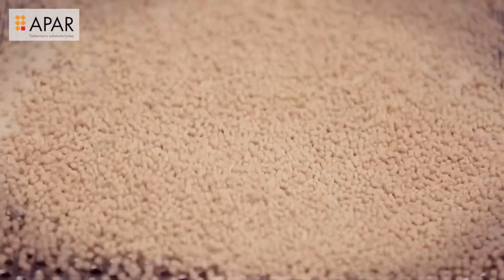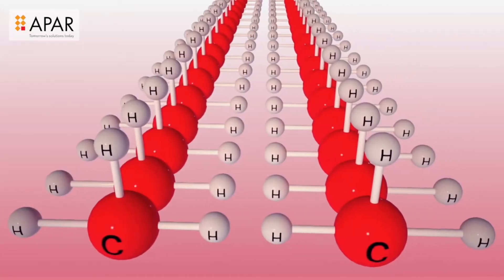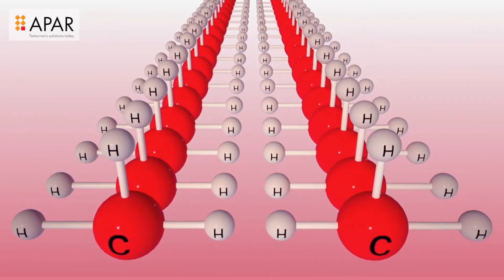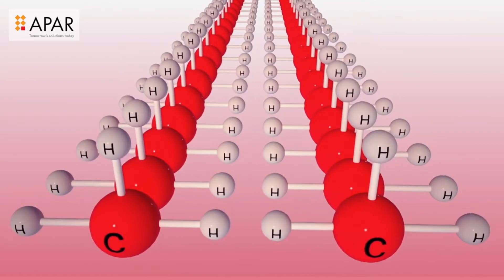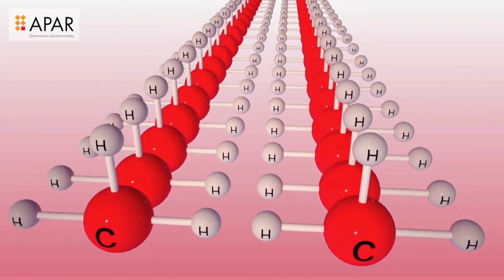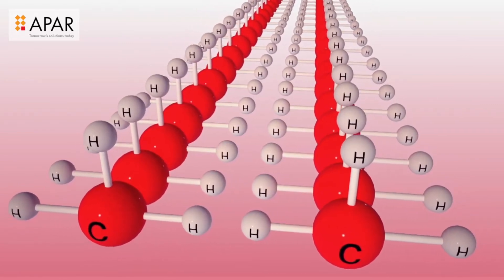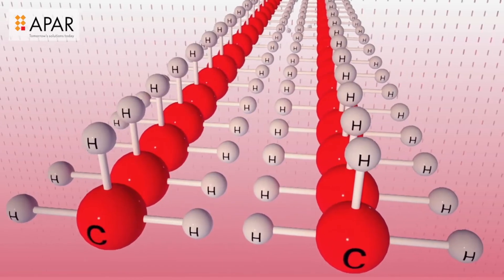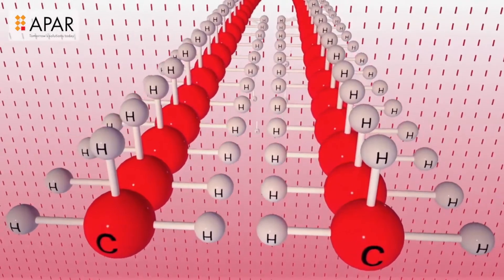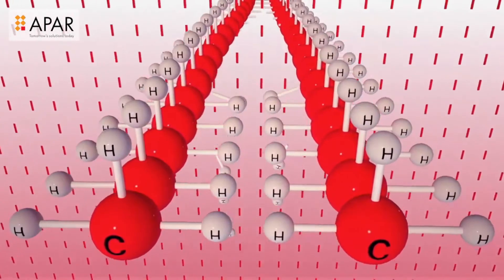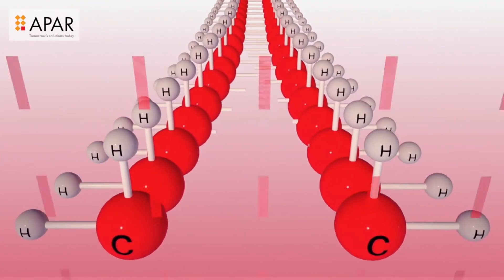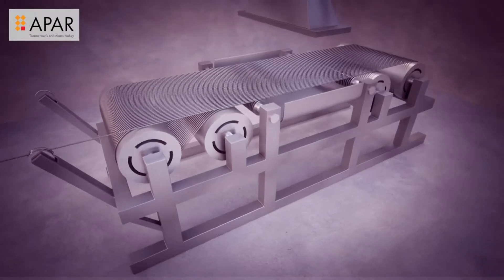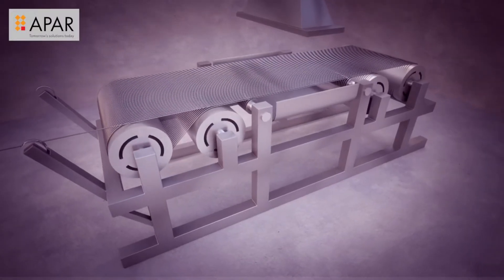The cross-linking process: polymers are made of hydrocarbons having carbon-carbon as strong bonds and carbon-hydrogen as weak bonds. The electron beam irradiation is a process in which the polymer is exposed to a stream of electrons. The high velocity electrons break the weak carbon-hydrogen bonds and create carbon-carbon double bonds, which we call cross-links between molecules.